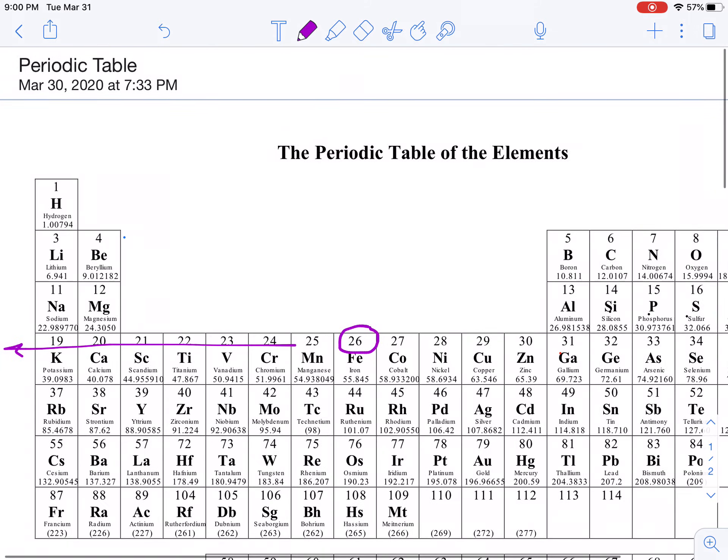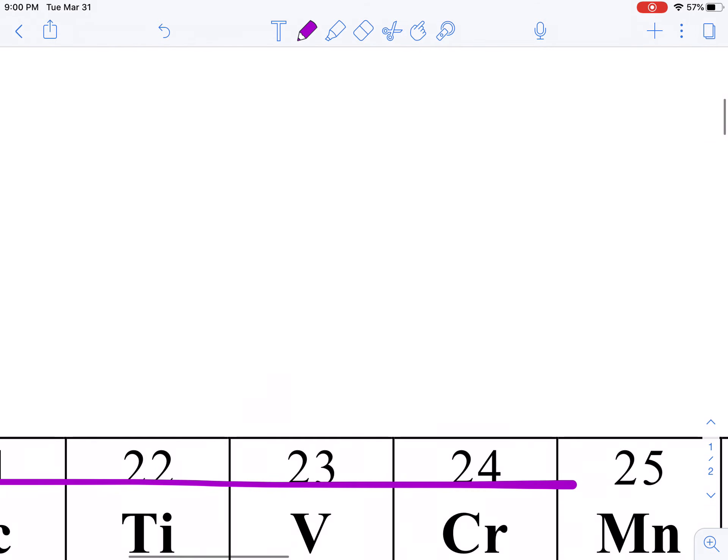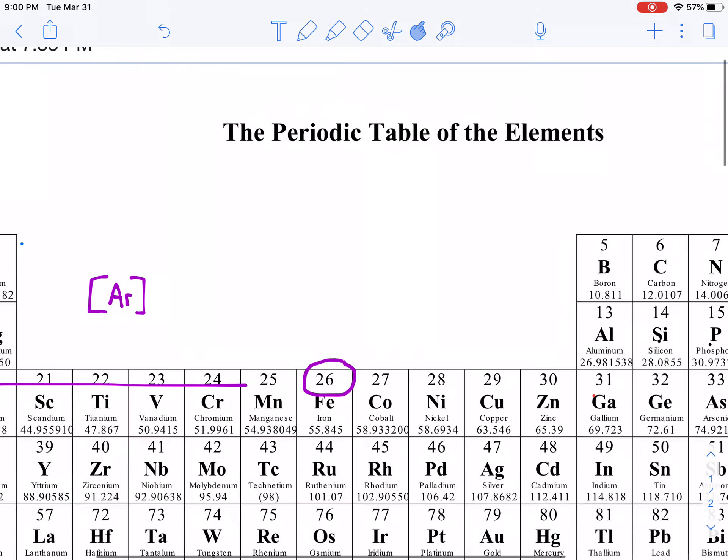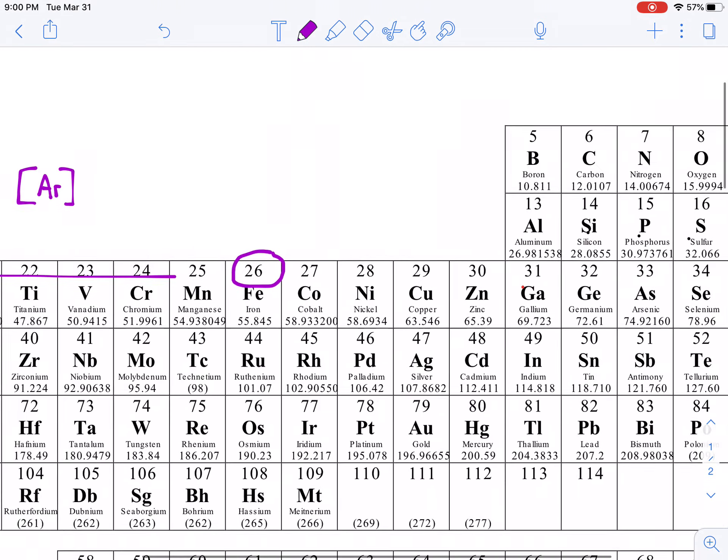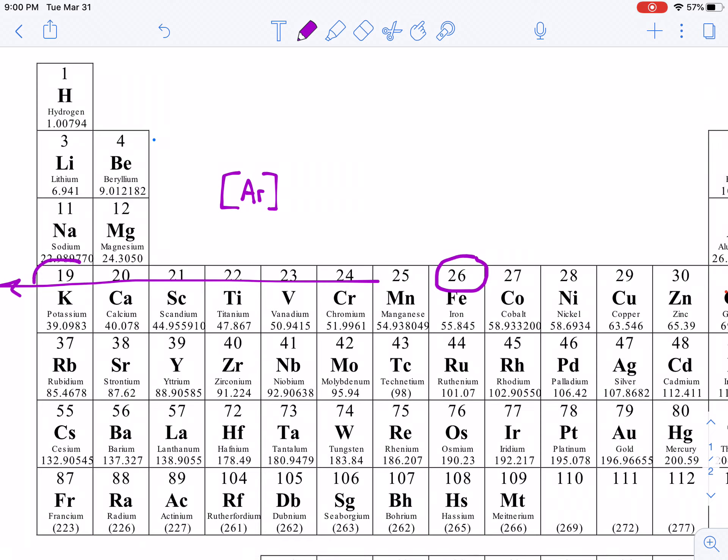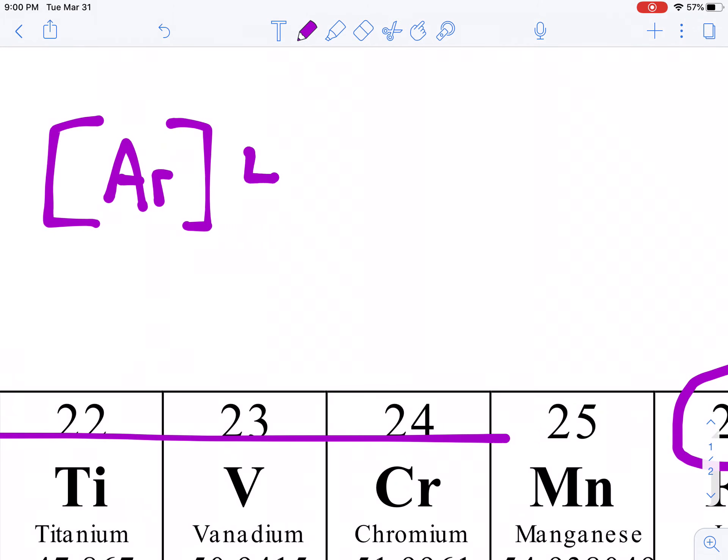So, to write the electron configuration for iron shorthand, we're going to put [Ar] in brackets. That's our noble gas, argon. And then what comes next? After argon, argon got us up to atomic number 18. After that comes atomic number 19. That's part of potassium. That is in the 4s1 sublevel. But remember, we're going to call it 4s2 because we complete the sublevel.